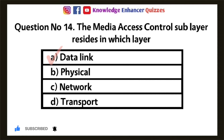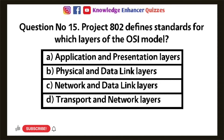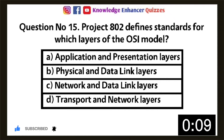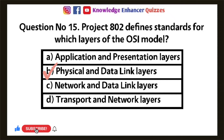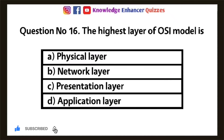Question 15: Project 802 defines standards for which layers of the OSI model? Option A: Application and presentation layers, Option B: Physical and data link layers, Option C: Network and data link layers, Option D: Transport and network layers. Option B is the right answer.